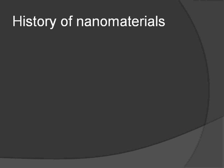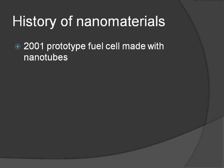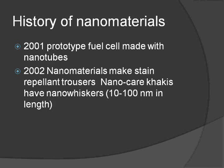In 2001, the first prototype fuel cell was made with the help of nanotubes. In 2002, nanomaterials were used to make stain-repellent trousers — nano-care khakis — having nano-whiskers ranging from 10 to 100 nanometers in length.